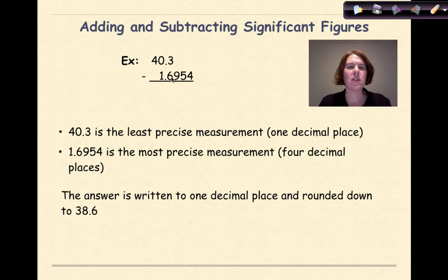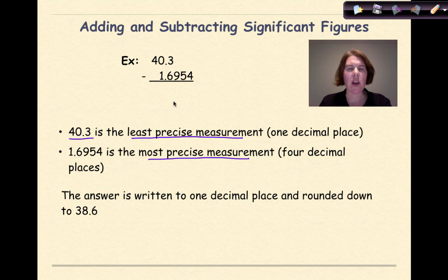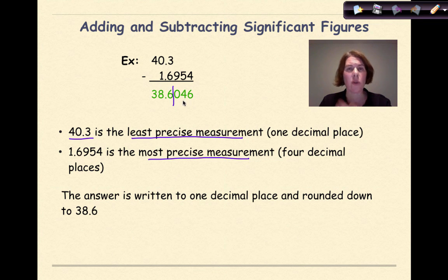Let's look at a subtraction example: 40.3 minus 1.6954. The 40.3 is the least precise measurement because it only goes out one decimal place. The 1.6954 is the most precise because it goes out four decimal places. If we put this into a calculator, we'd get 38.6046. Our answer can only go out one decimal place, so we round and our answer will be 38.6.